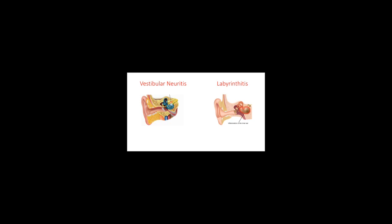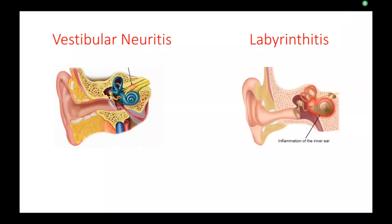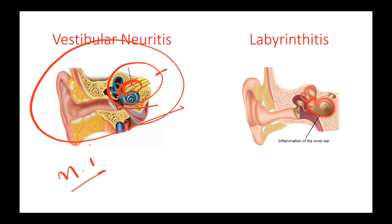As you can see here, this is the vestibulocochlear nerve, and this is the vestibular part. There is some small inflammation in the vestibular nerve — this is the vestibular part of the vestibulocochlear nerve. This is just a nerve inflammation which will get better with time. It is not going to have any major effects on the patient because the inner ear is not affected — it's just the nerve which is getting a little inflamed.